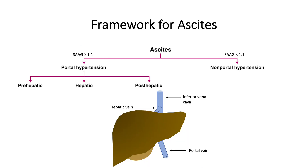The causes of portal hypertension can be subdivided according to location relative to the liver: prehepatic, intrahepatic, and posthepatic. This sequence begins with the portal system and ends on the other side of the liver where structures such as the inferior vena cava and heart are located.